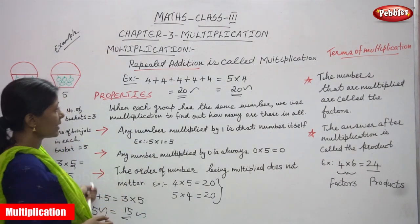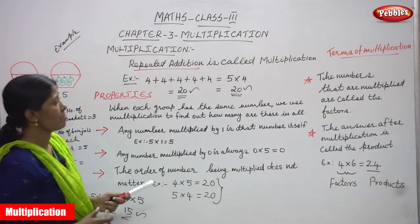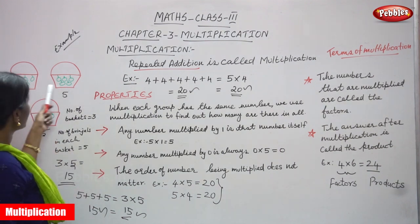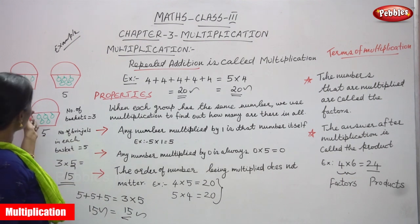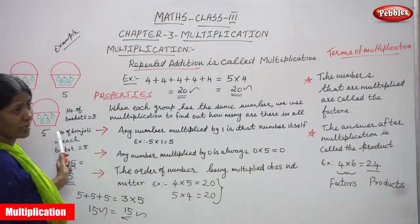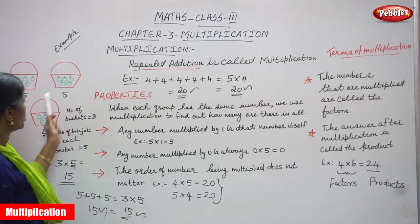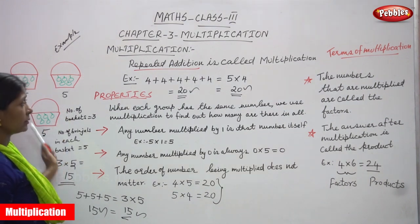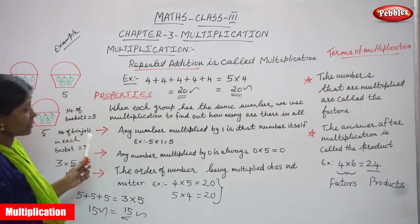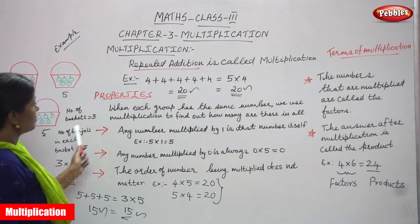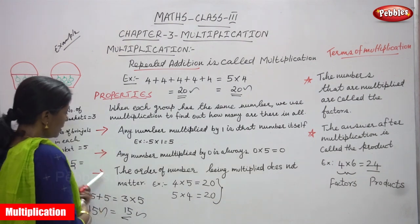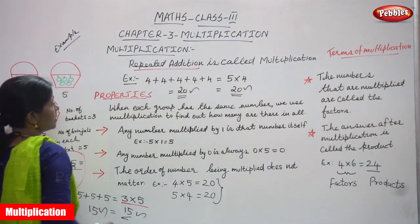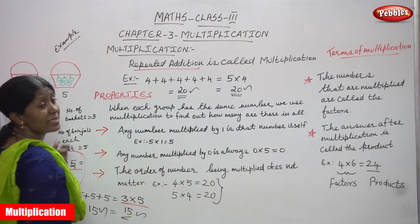Properties of multiplication. First: when each group has the same number, we use multiplication to find how many there are in all. In our example, there are 3 groups — 3 baskets — each with the same number of brinjals: 5 brinjals per basket. So we use multiplication to find the total number of brinjals.